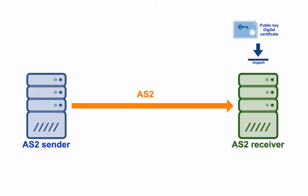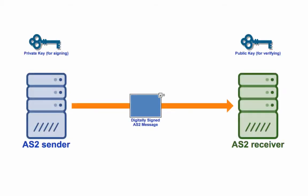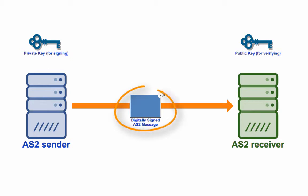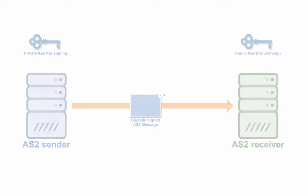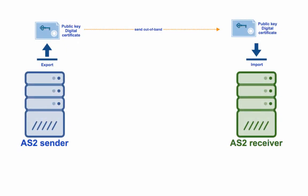We're now done with the first section and can now proceed to the steps that need to be carried out on the receiving end. There's only one thing that needs to be done on the receiving end: your trading partner only needs to import the digital certificate you exported in that last step. That digital certificate contains the public key that corresponds to the private key your server will be using to sign each outgoing AS2 message. In order for the AS2 receiver to verify the digital signature on those messages, the receiver will need to have that private key's corresponding public key — and so that's why your trading partner, which will serve as the receiver, will need to import that digital certificate.